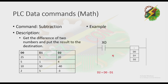You need to be careful using this command, because unlike addition, the values of D0 and D1 cannot be interchanged here. From the table: 25 minus 5 gives 20; 5 minus 1 gives 4; 10 minus 50 gives negative 40; and 2 minus 5 gives negative 3. That's how subtraction works.